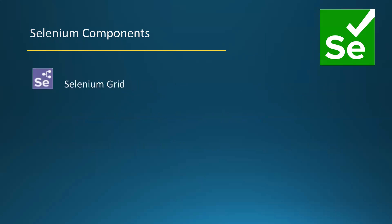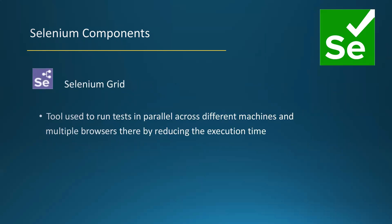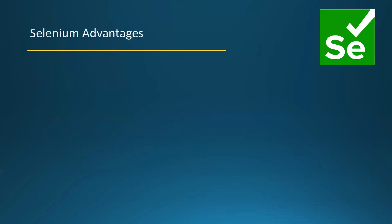The last component is Selenium Grid, another powerful component which is used to run tests in parallel across different machines. Those machines can have different platforms and we can run on different browsers as well. So at the same time, we can run the same script on multiple different machines and multiple browsers, thereby reducing the execution time.